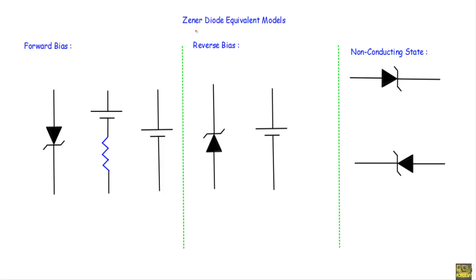Here I will show you the overview of Zener diode equivalent circuit using this circuit model, and I will show you the Zener diode equivalent circuit using the IV characteristics of Zener diode. This Zener diode will operate in three different bias regions: forward bias, reverse bias, and non-conducting state.